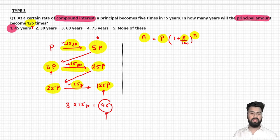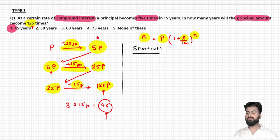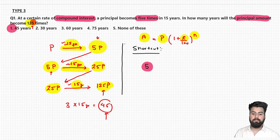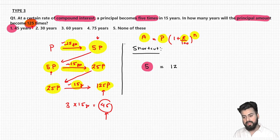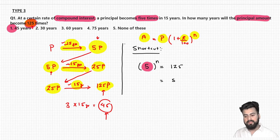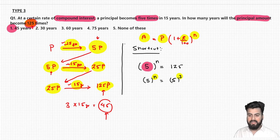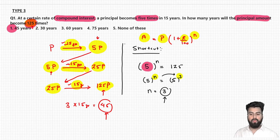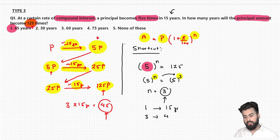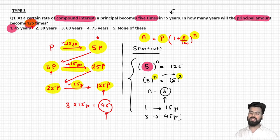Let me introduce the shortcut. The principal becomes 5 times itself after every compounding period. I want it to become 125 times. So try to express 125 as a power of 5: 125 = 5³. Comparing with 5^n, the value of n is 3, where n is the number of compounding periods. With 3 compounding periods each of length 15 years, the total time is 3 × 15 = 45 years. This is an easier way to answer such questions.